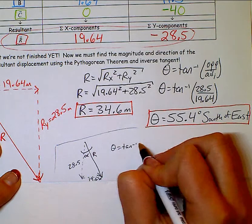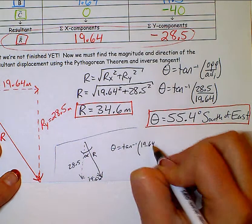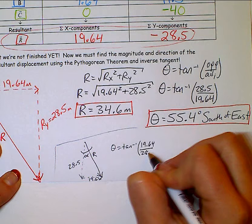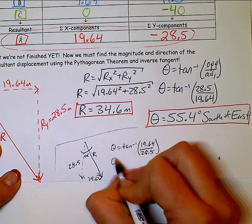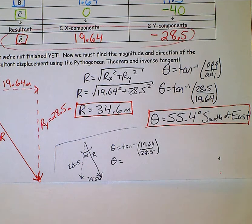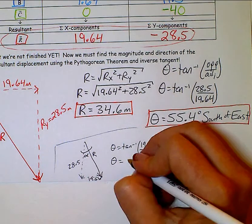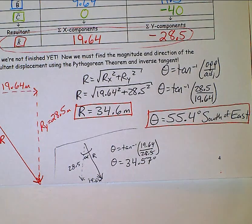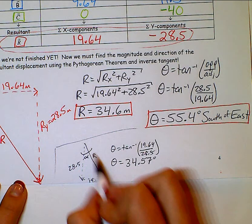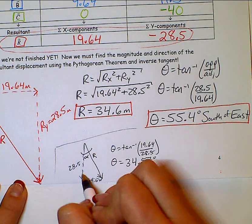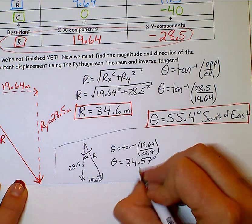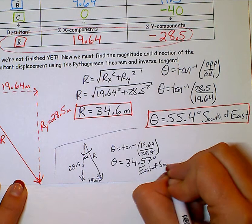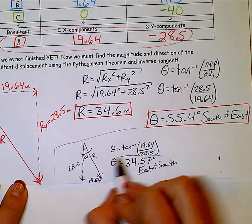This time when you go to do inverse tangent, opposite would be the 19.64 and adjacent would be the 28.5. And this would give you the complement of 55.4. This ends up giving me 34.57 degrees. But it's not just a random 34.57. If I'm talking about this version of my answer triangle, I go south first and then east. So this would be east of south.